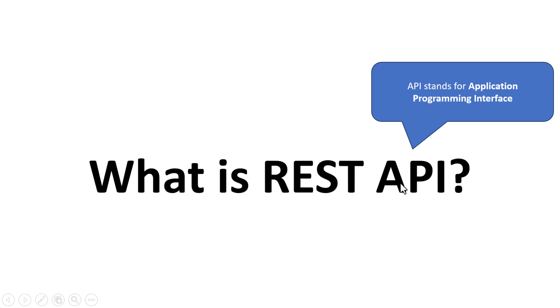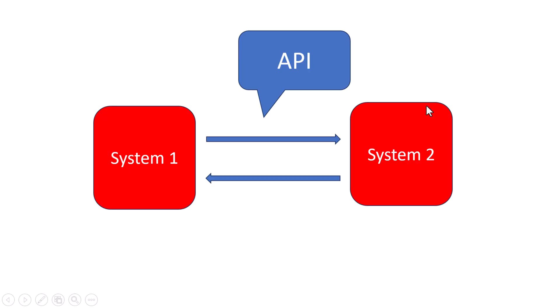Hi everyone, welcome back. In this lecture we're going to take a look at what is a REST API. First, let us talk about the term API. API stands for Application Programming Interface. That might sound technical, but think of it like this: an API is simply a way for two different software systems to talk to each other.